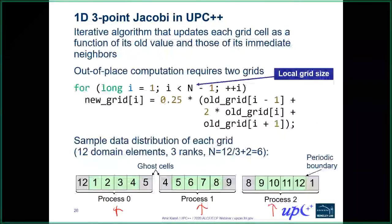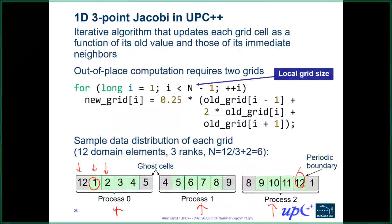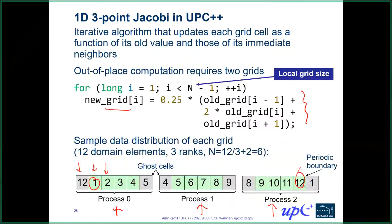Because we have a nearest-neighbor computation with a periodic boundary condition, to compute the new value of grid cell number 1 we need the old value of the neighbors: element 2 and element 12 across that periodic boundary. The computation is a simple nearest-neighbor update: the new value at index i is computed from old values at i-1, i+1, and the old value of the element itself.